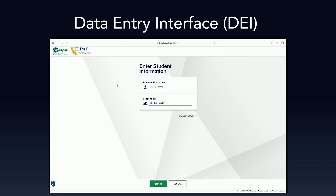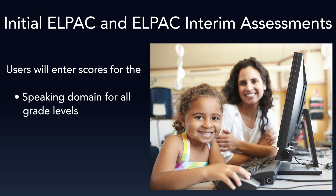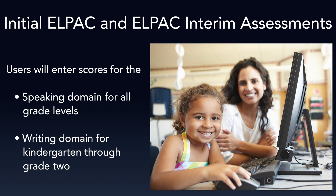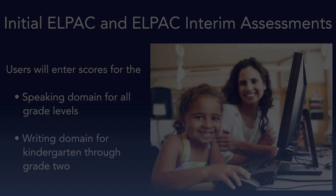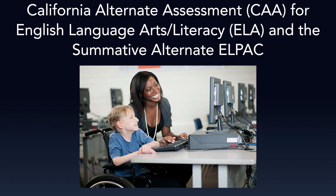This video will demonstrate how to enter Student Responses and Scores for the following tests into the DEI. For the Initial ELPAC and the ELPAC Interim Assessments, users will enter scores for each question in the Speaking Domain for all grade levels and the Writing Domain for Kindergarten through Grade 2. For the Summative ELPAC, users will enter scores only for the Speaking Domain for all grade levels. For the California Alternate Assessment, or CAA, for English Language Arts and Literacy, or ELA, and the Summative Alternate ELPAC,